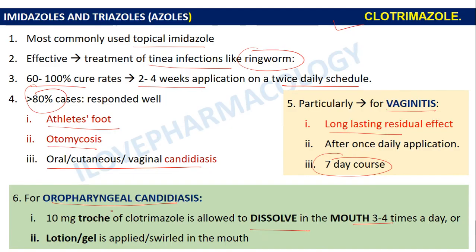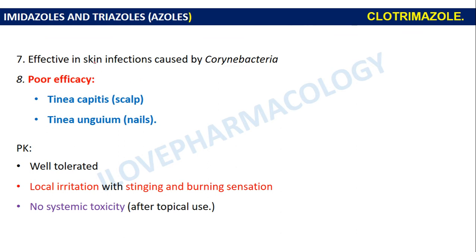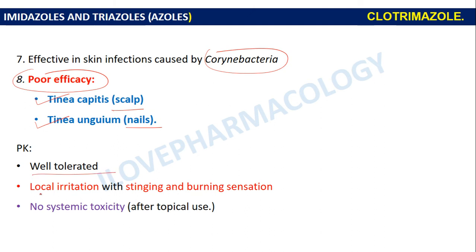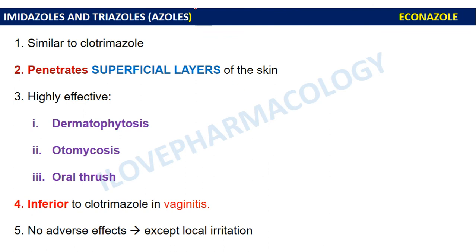Clotrimazole is also effective against skin infections caused by corynebacteria. However, it has poor efficacy against tinea capitis (scalp infection) and tinea unguium (nail infection). Though well tolerated, it can produce local irritation, stinging, and burning sensation. After topical application there is no systemic toxicity.